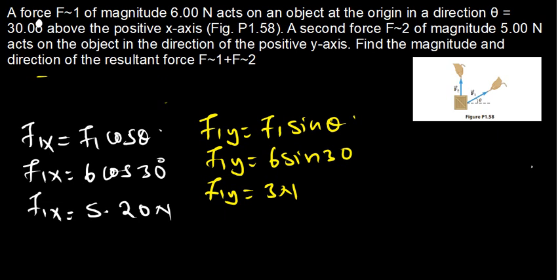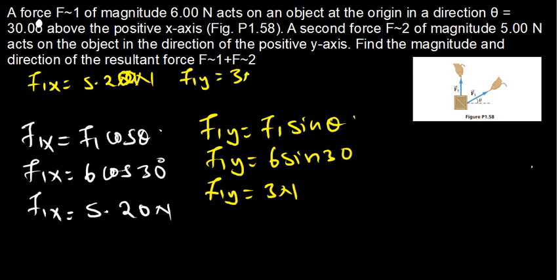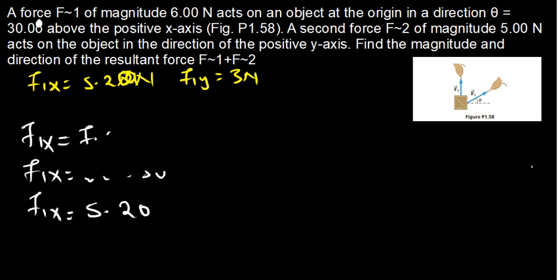So we have our F1x, which is 5.20 Newtons, and our F1y, which is 3 Newtons. Now let's talk about F2.